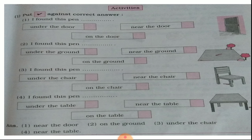There is an activity below. Put a tick against the correct answer. The answer options are given below — whichever is the correct answer, put a tick mark on it and also write it in front. I found this pen near the door. I found this stone. I found this pen under the chair. I found this pen near the table. Look at the picture and choose the correct answer and write it.